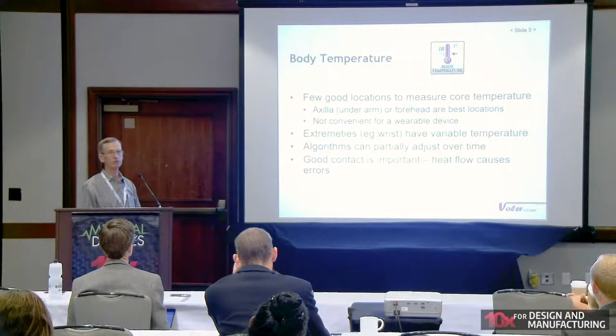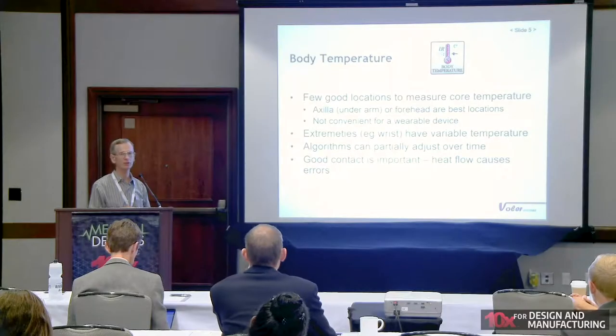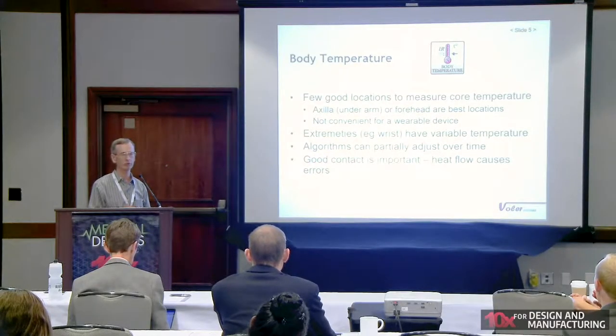Body temperature seems very straightforward — thermometers are old-fashioned. But it's difficult because what you really want to measure in most cases is the core temperature, and what you're measuring is the skin temperature. The skin temperature on the wrist, for example, may be very different from the core temperature if you're in a cold room or outdoors when it's cold.